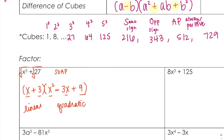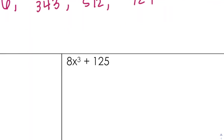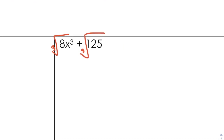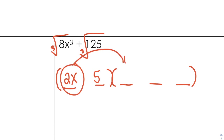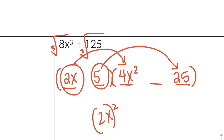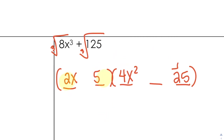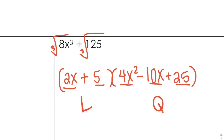Taking a look at the next one: 8X cubed plus 125. I have two terms. 8X cubed is a perfect cube, 125 is a perfect cube. The cube root of 8X cubed is 2X, the cube root of 125 is 5. To go from those to the quadratic: 2X squared is actually 4X squared, and 5 squared is 25. To get the middle term, I multiply 2X times 5 to get 10X — I don't have to double it because it's not a PST. Then follow SOAP: same sign plus, opposite sign minus, always positive. I have a linear factor and a quadratic factor because 1 plus 2 is 3.